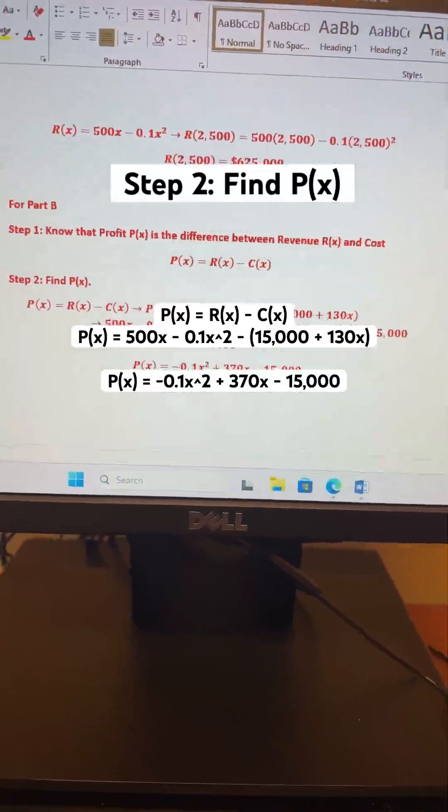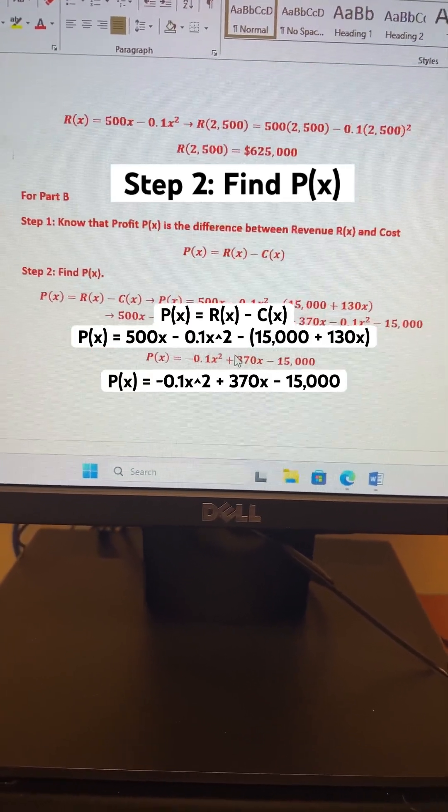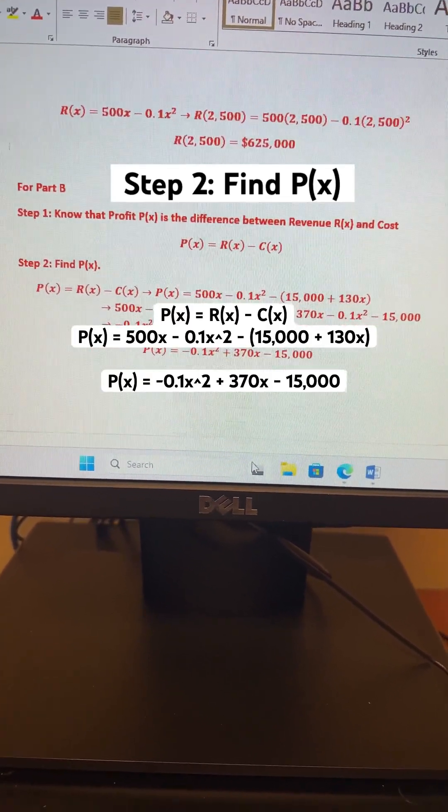So plug in them values and you're going to get P(x) is equal to negative 0.1x squared plus 370x minus 15,000.